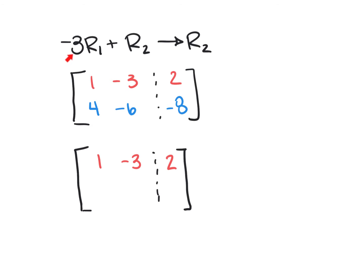It says to first multiply row 1 by negative 3. And then when I get that result, I'm going to add it to R2.